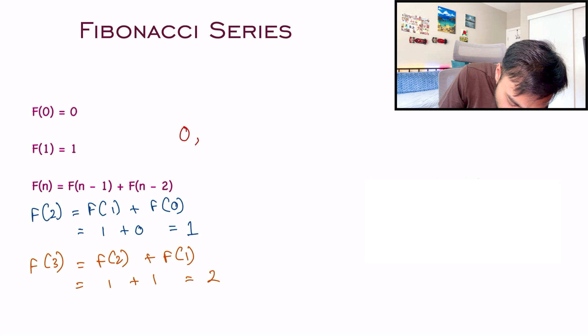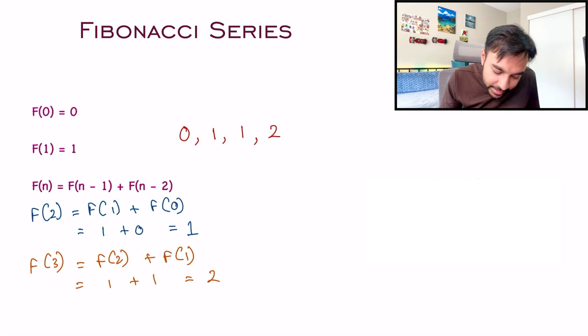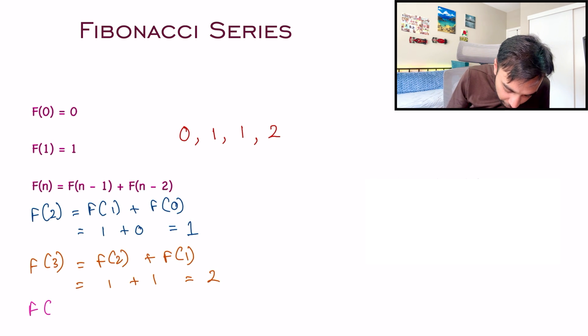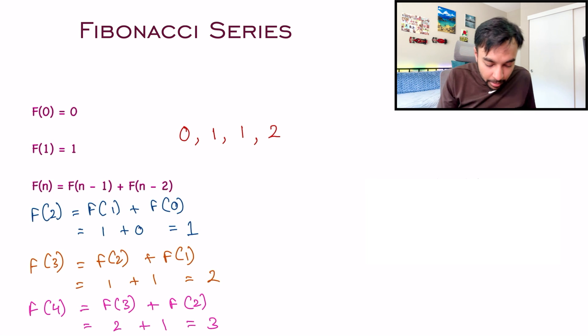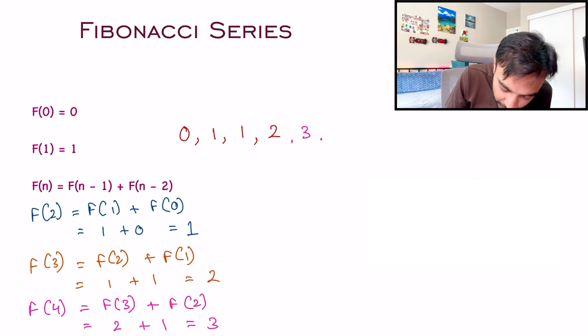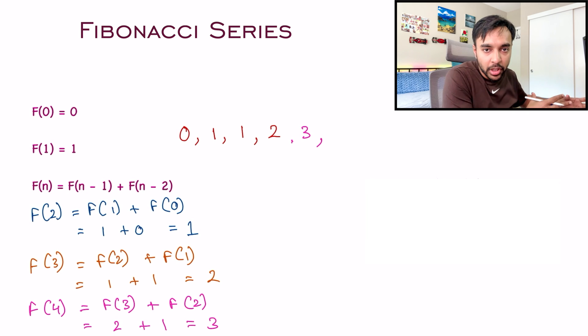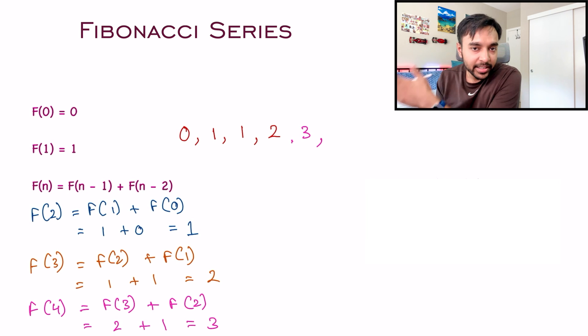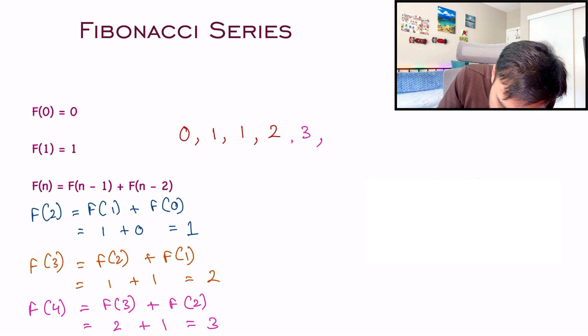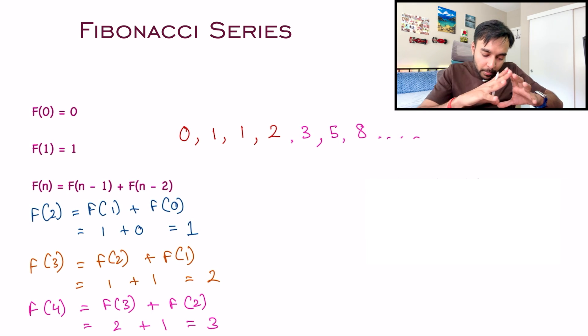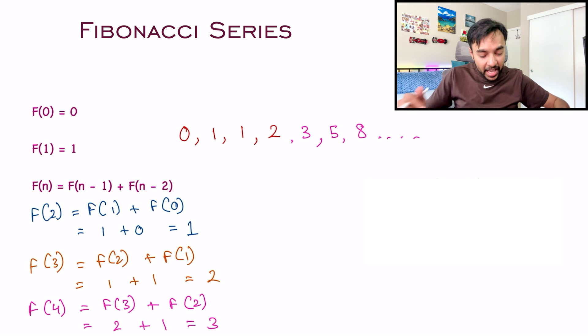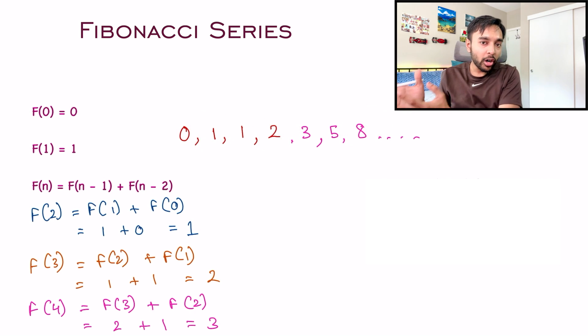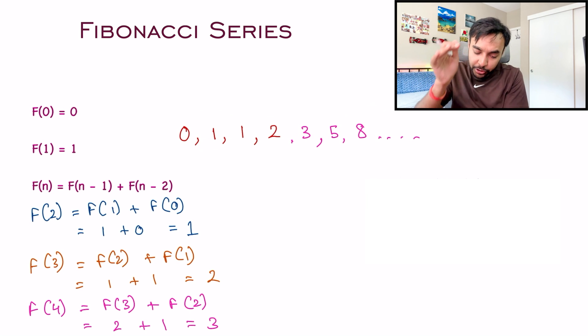If someone asks what's the next number, you write F(3) equals F(2) plus F(1). You don't have to calculate F(2) again - you already know F(2) is 1, so you reuse this value. This is how you start to get a series: F(0) is 0, F(1) is 1, F(2) is 1, F(3) is 2. Similarly, you can find F(4) which is 3. Technically, you're just adding the last two numbers to get your next number. The series goes 5, then 8, and so on.